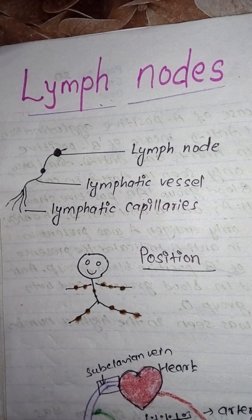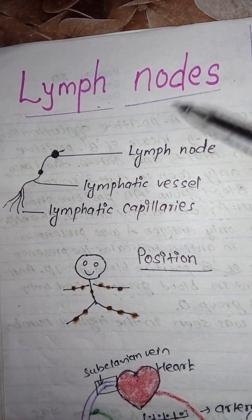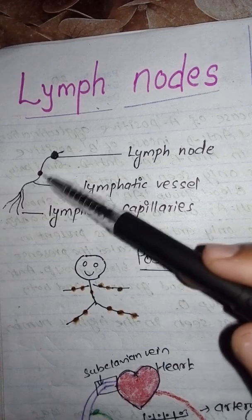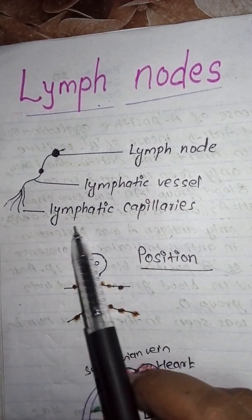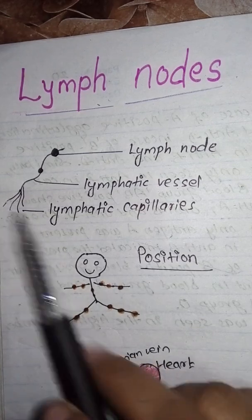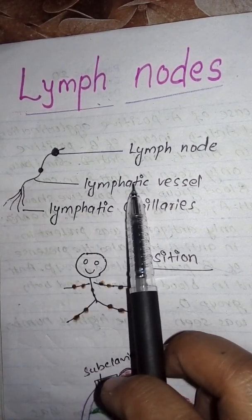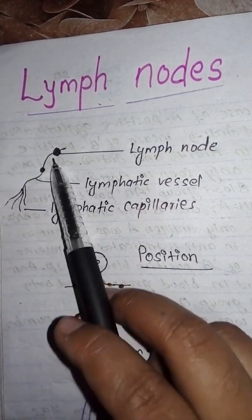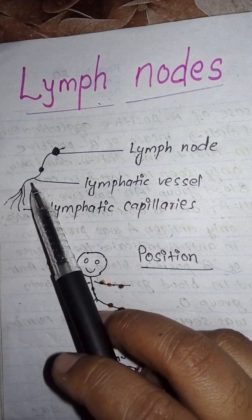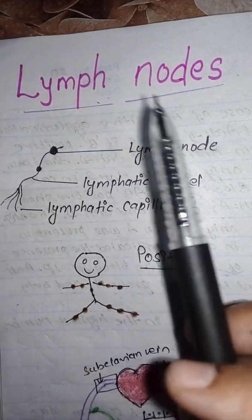Hello everyone, welcome to the biology tutorial. Today we are going to discuss the lymph nodes. Lymph nodes are present in the lymphatic vessels, which are made from lymphatic capillaries. These tiny capillaries make larger units known as lymphatic vessels, and along the way different nodes are present. They may be of different sizes — some as small as a pea, some as large as an almond.